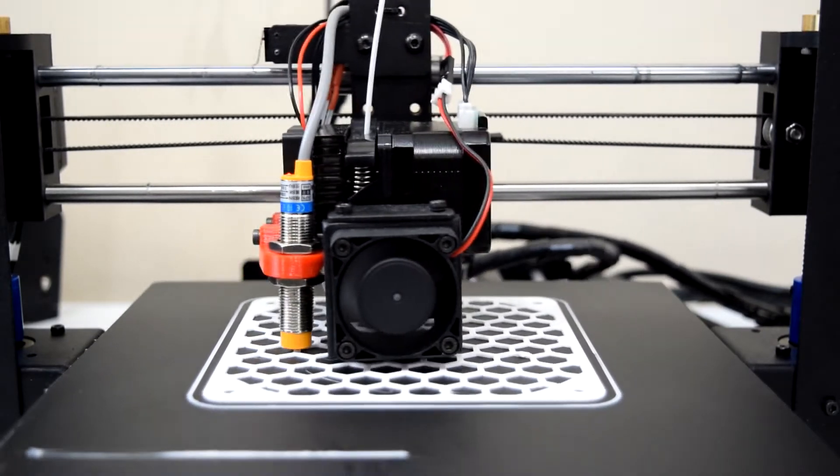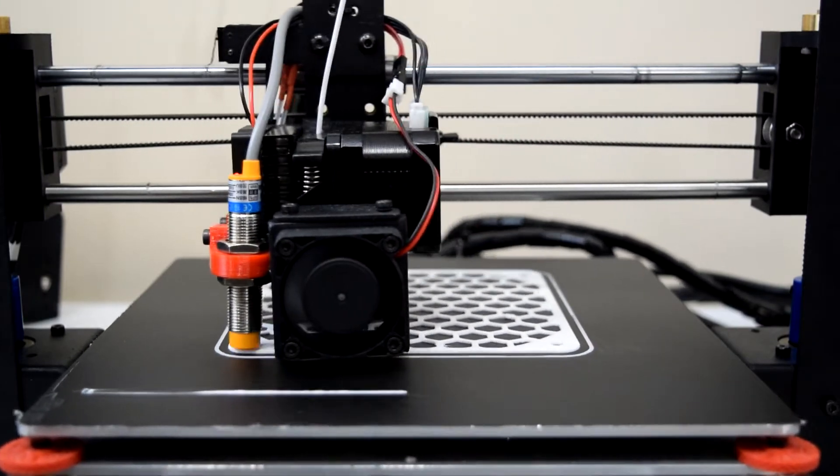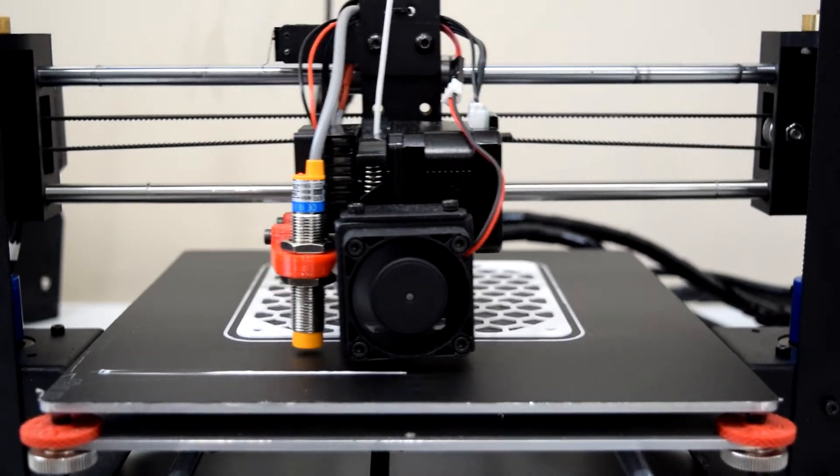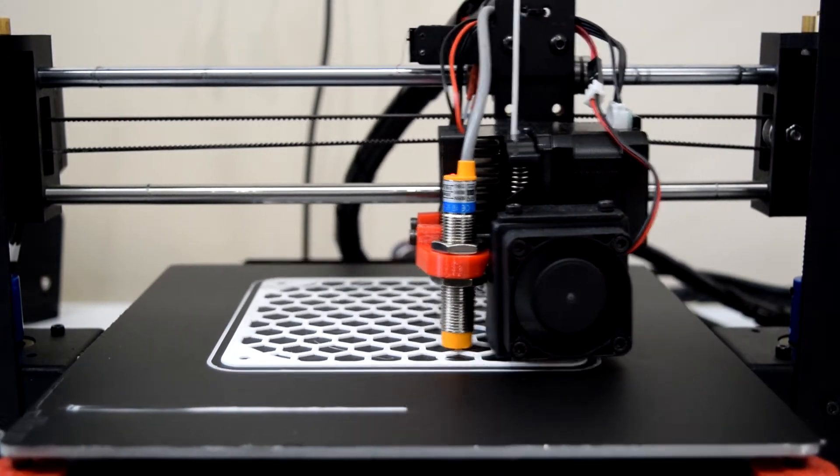Hey guys, welcome back to the channel. A couple weeks ago I uploaded a video explaining how to install an auto bed leveling sensor on the Monoprice Maker Select V2 using an Arduino Uno as the interface between the sensor and the Z end stop switch.